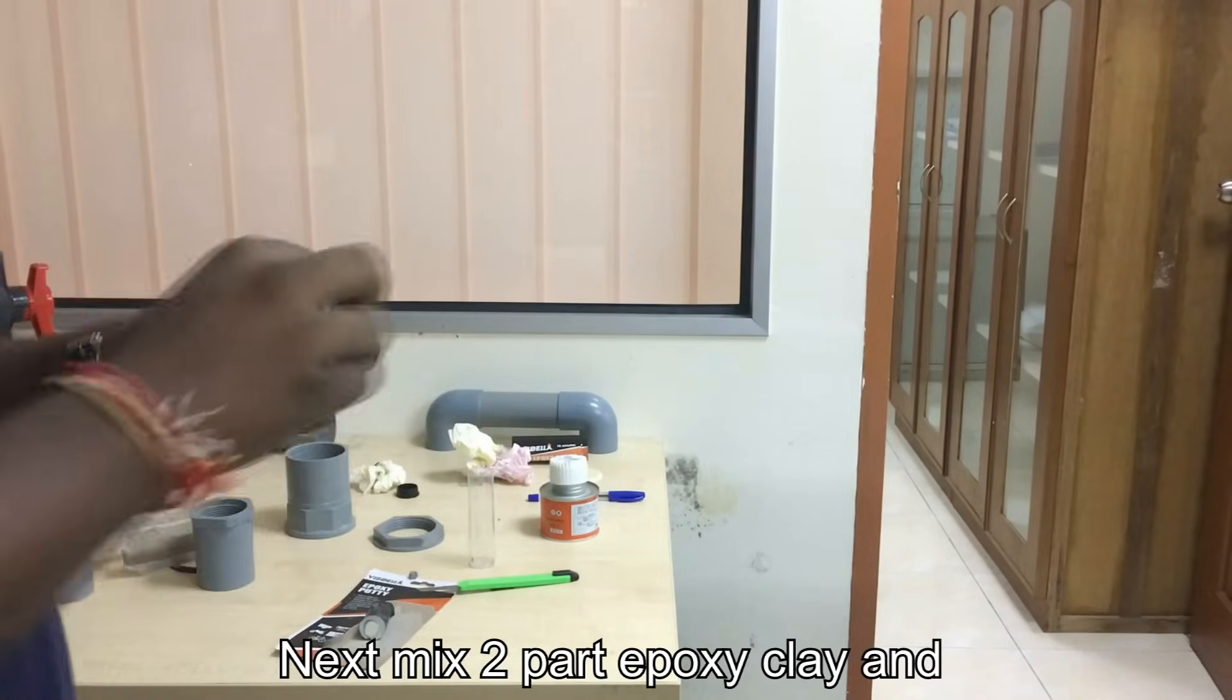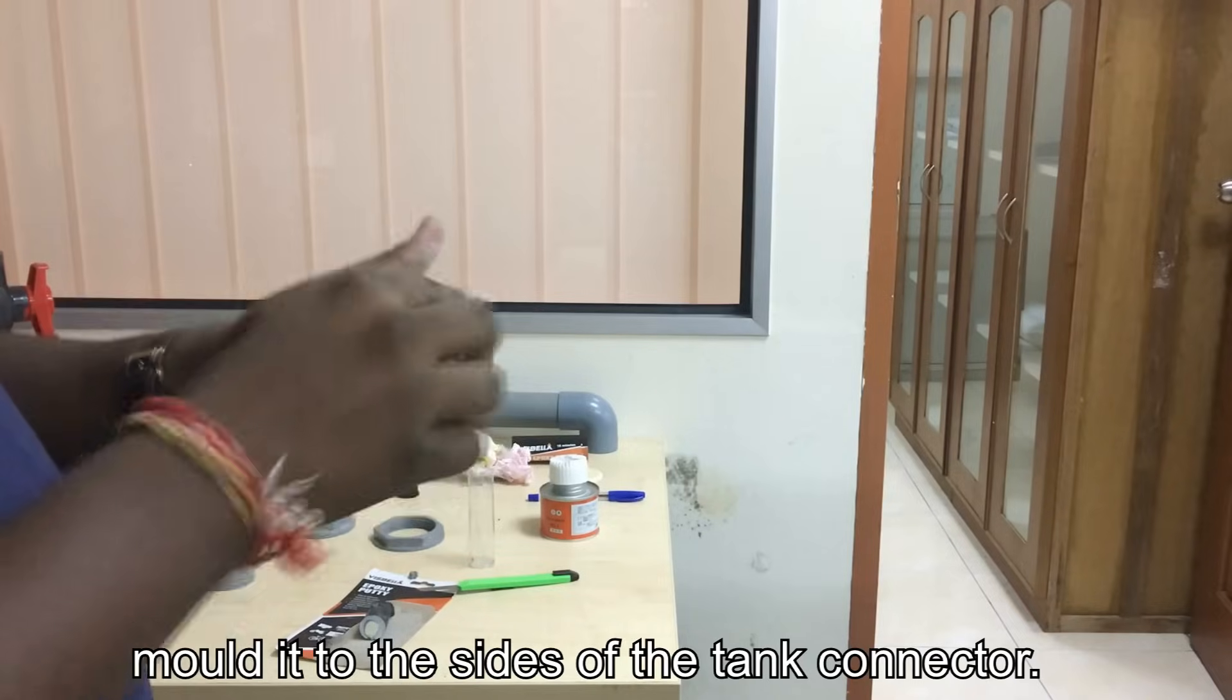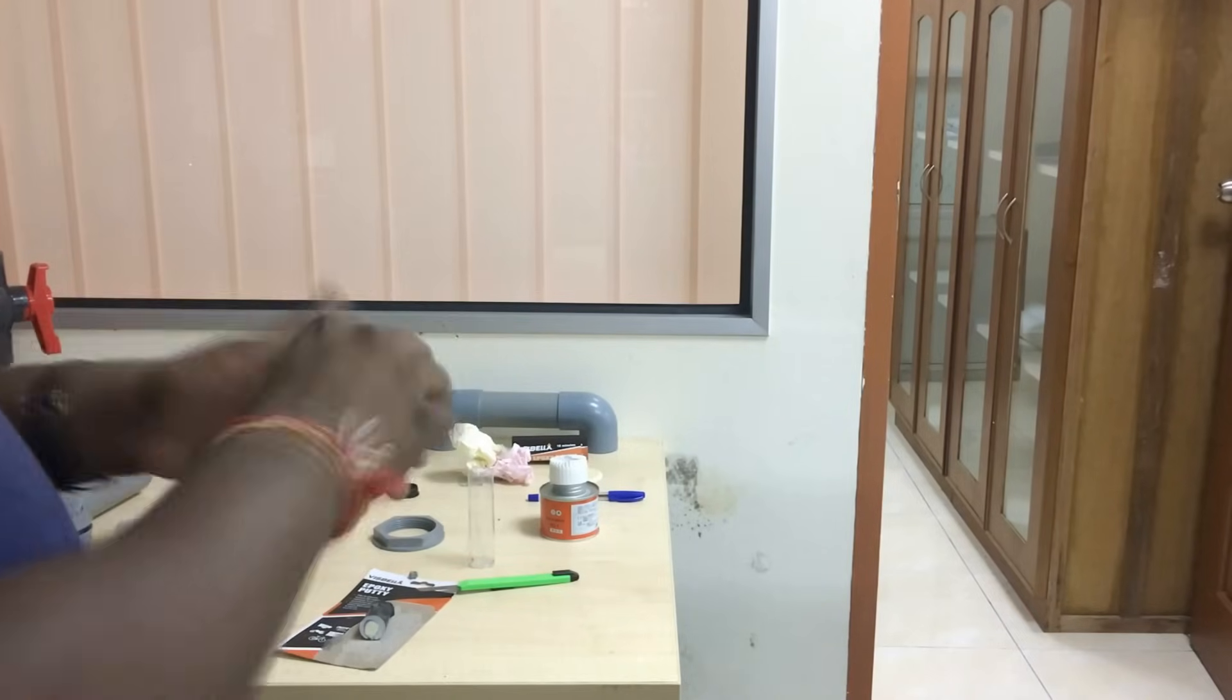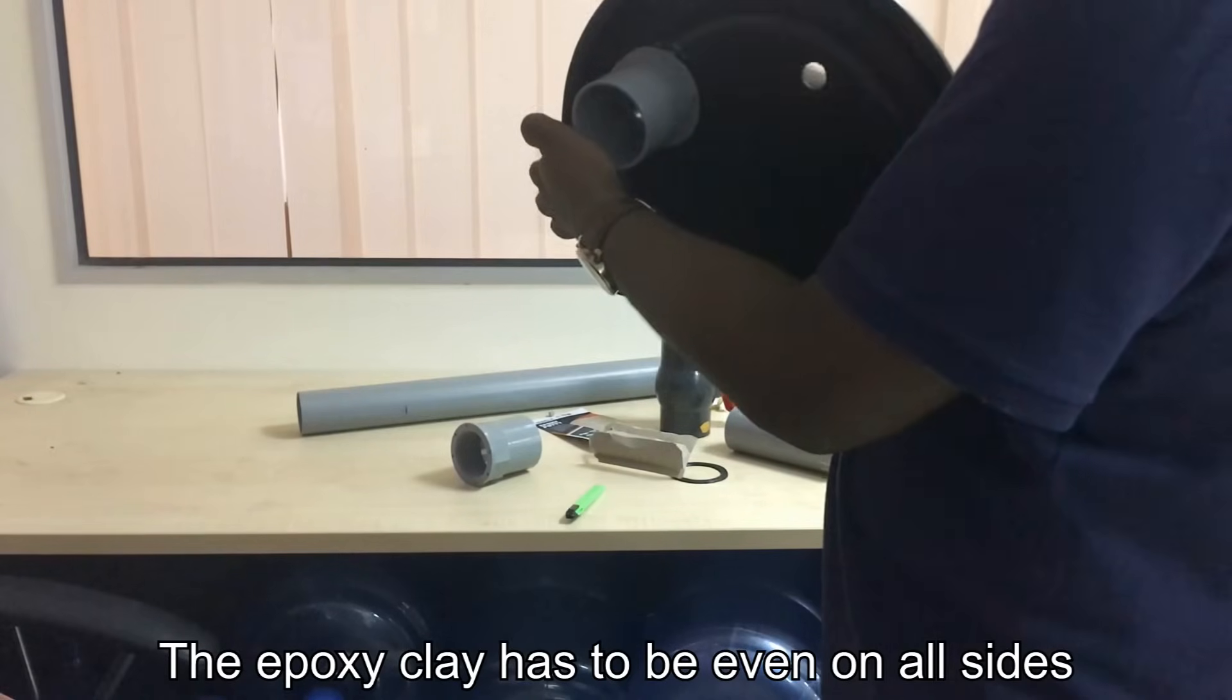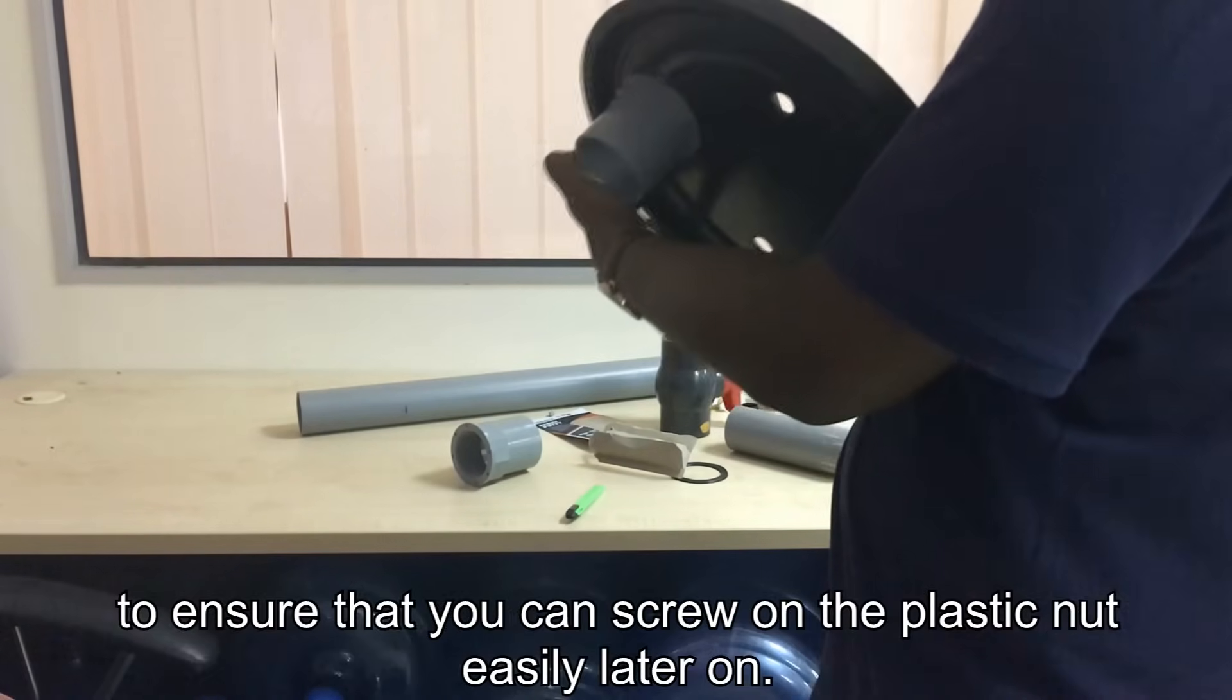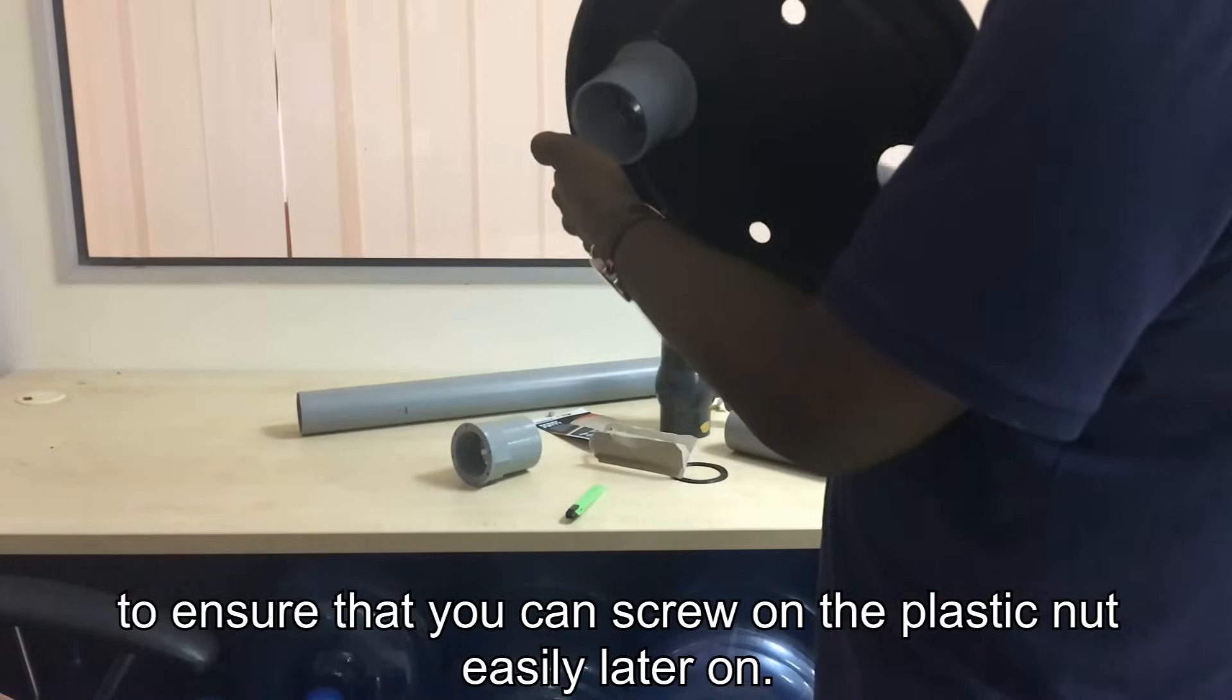Next, mix two-part epoxy clay and mold it onto the sides of the tank connector. The epoxy clay has to be even on all sides to ensure that you can screw on the plastic nut easily later on.